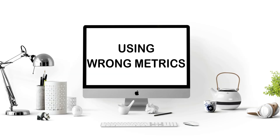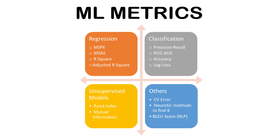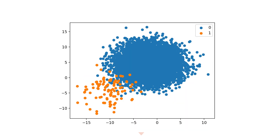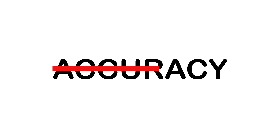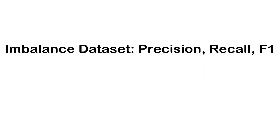Using wrong metrics. Choosing the wrong metric is a classic trap in machine learning. Accuracy alone can be misleading — remember the class imbalance example. A 99% accuracy on a dataset where 99% are of a single class is not a good model.